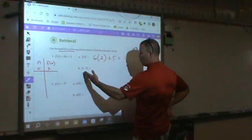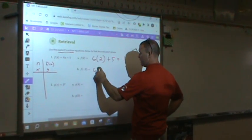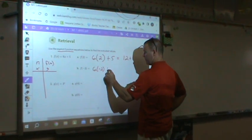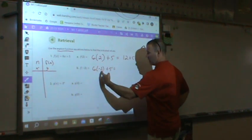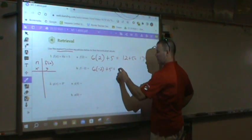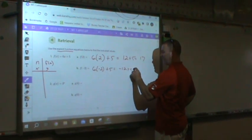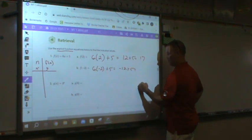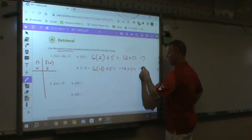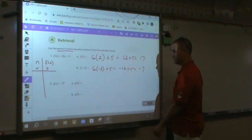On this one, what are we replacing x with? We're replacing it with negative 2 plus 5. Again, use multiplication first, so you get negative 12 plus 5. What's 12 minus 5? That should give you negative 7. More negatives than positives.